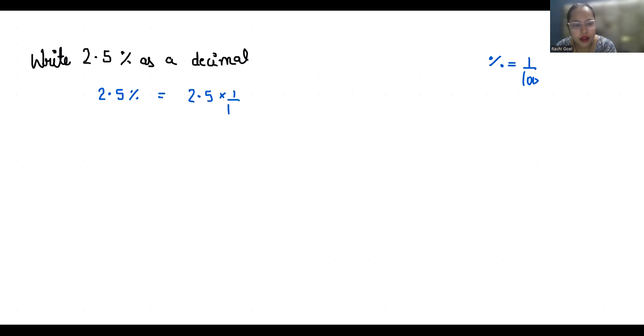This equals 2.5 by 100. Now I am going to multiply by 10 in both numerator and denominator, so our numerator becomes 25 and it becomes 1000. Now to convert a fraction into decimal, you can simply divide the numerator with denominator.